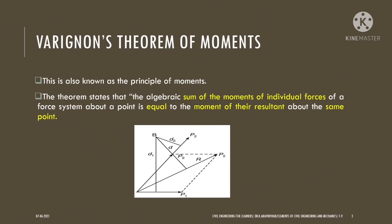Now there is a concept called Varignon's theorem. This theorem states that a moment is a force acting under a moment effect, and it is applicable for moments. Moment is force times perpendicular distance, and the theorem states that the sum of moments of individual forces equals the moment of their resultant force about the same point. For example, if two forces P1 and P2 are acting together.